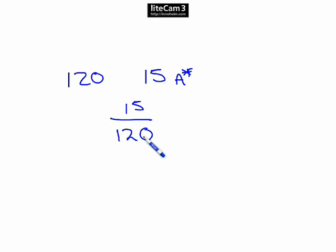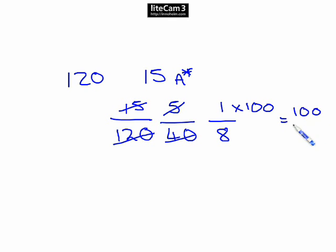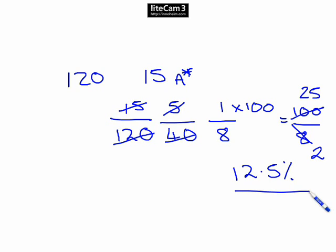We need to simplify this down a little bit. So we can divide by 3. So 3's into there will go 5 times. 3's into here will go 40 times. We can still reduce this down. 5's into there will go once. 5's into there will go 8. 1 eighth, if you're not sure what it is as a decimal, times the top by 100 will give you 100 over 8. Reduce that down. We can put 4's into here. So 4's will go into here 25 times. 4's will go into here twice. So 25 divided by 2 is 12.5. So our answer is 12.5%.